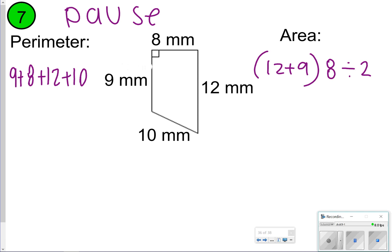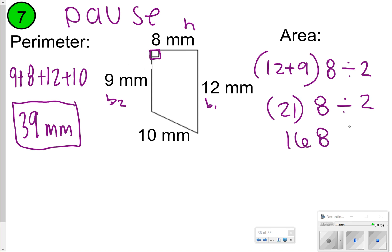So here I've already set up everything I needed. For perimeter, I'm doing 9 plus 8 plus 12 plus 10, and you should get 39 millimeters. Make sure that you set up correctly or solve correctly your area. 12 and 9 are B1 and B2—those are the two parallel lines. 12 plus 9 is going to give me 21, and I'm going to take that and multiply by 8. 8 is my height because it's also connected to my right angle measurement. 21 times 8 is 168, and then I'm going to take that number and divide it by 2, and I get 84 millimeters squared. How did you do?